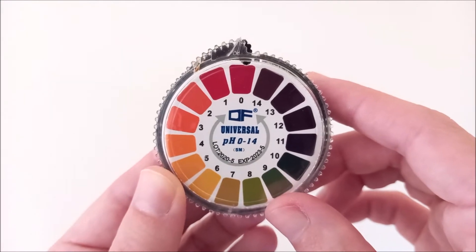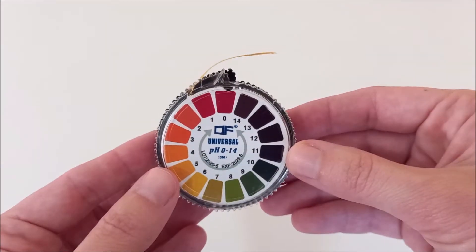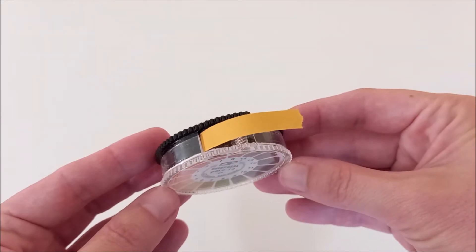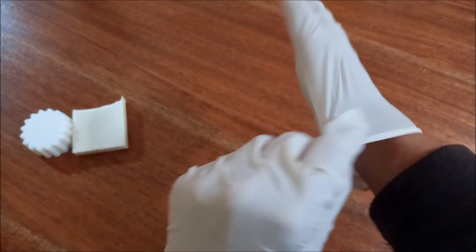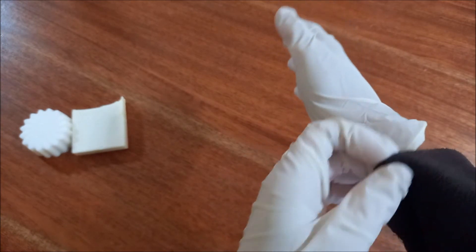Let's see how to test the pH using strips. This task should be done with gloves to protect the skin. If the soap is not yet cured, the pH should be tested during the curing process.